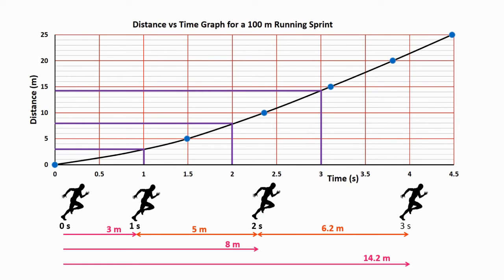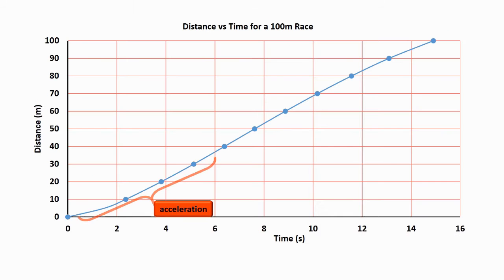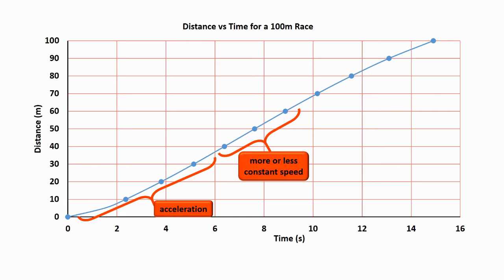So each second, I was covering more and more distance. And why is that? It's because I was getting faster and faster. And by definition, a faster speed means that you cover more distance per second. My acceleration phase lasted about 5 or 6 seconds, after which I maintained a more or less constant speed for a few seconds. Towards the end, I was slowing down.